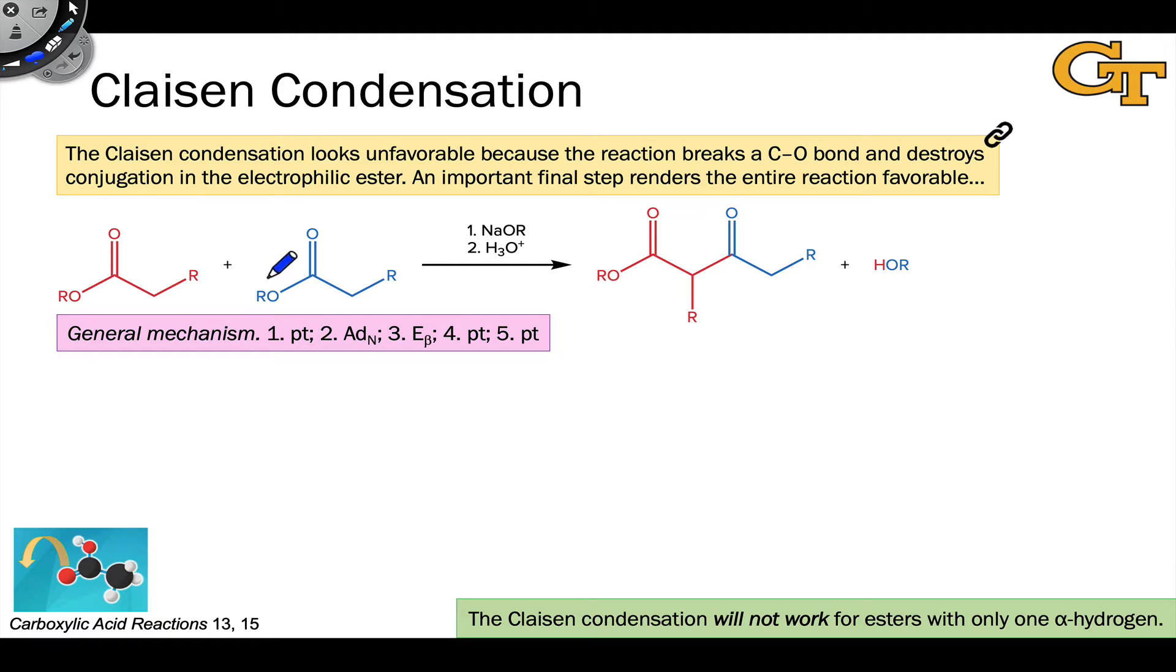In the last video, we noted that the simple Claisen condensation looks unfavorable because the reaction destroys conjugation within the ester. Notice that we have resonance structures involving the ester alkoxy oxygen in the starting ester, but in the product, the carbonyl group that becomes part of a ketone no longer has this resonance. This is one reason why the Claisen condensation, at least at face value, looks unfavorable.